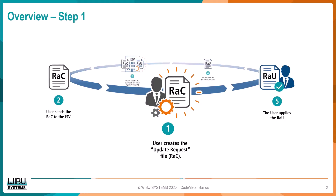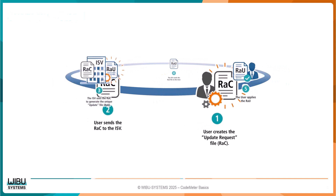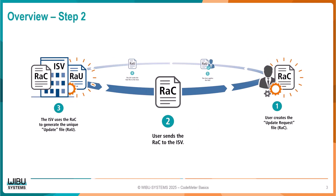The steps are simple, and we will explain each step in greater detail as we proceed. Step 1: The user creates the Update Request File, or RAC for short. FYI, RAC stands for Remote Activation Context.